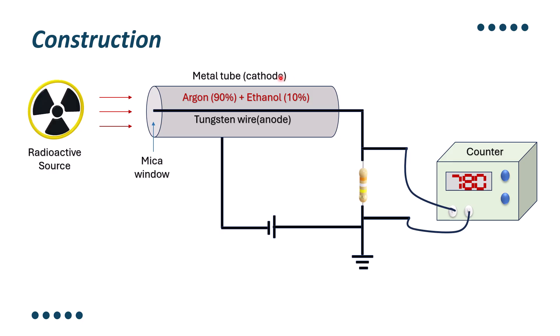Upon application of high amount of voltage to this cathode and anode, there will be the electrical discharge. At one end of the tube, a thin window of mica is arranged so that there will be the entry of radiations into the metal tube.